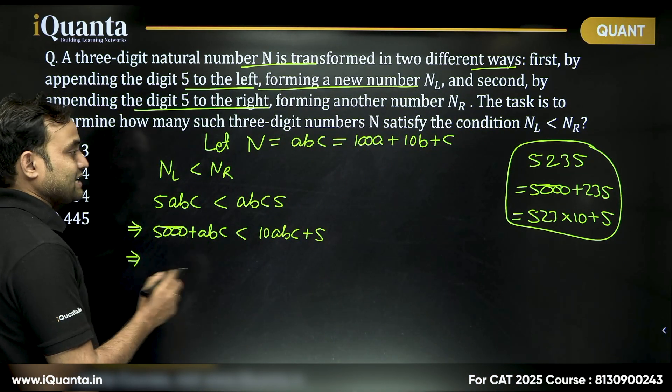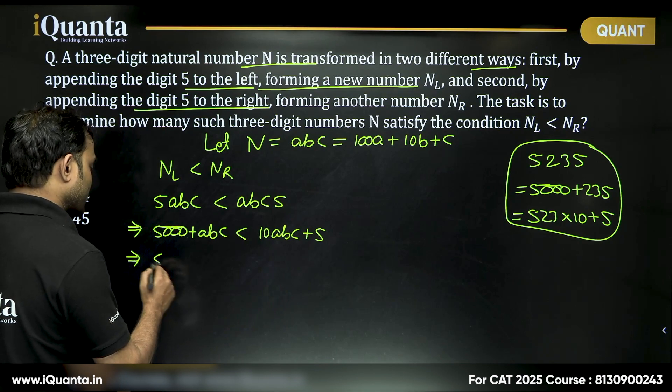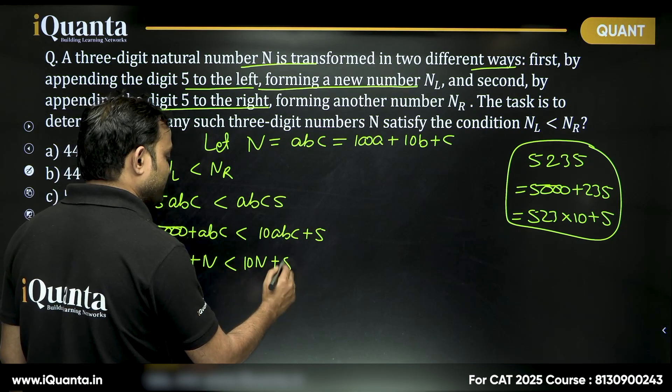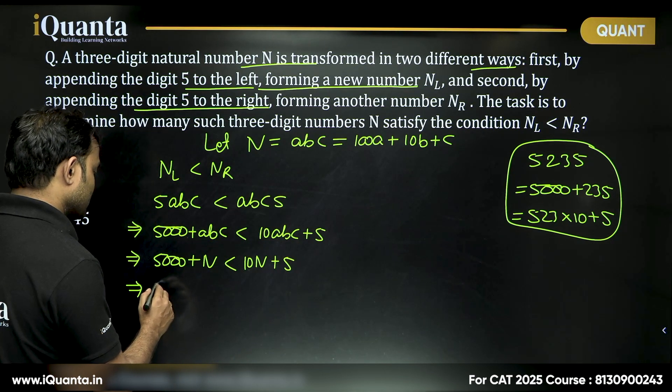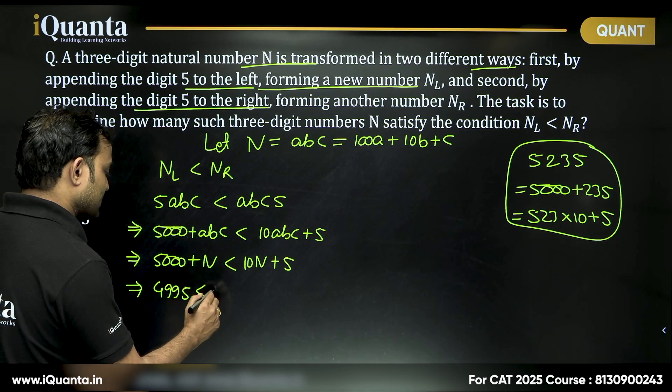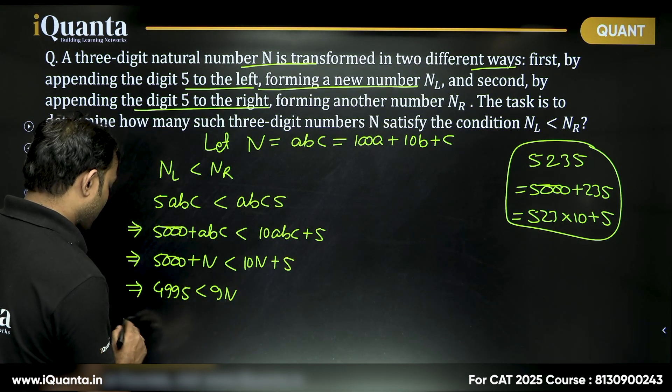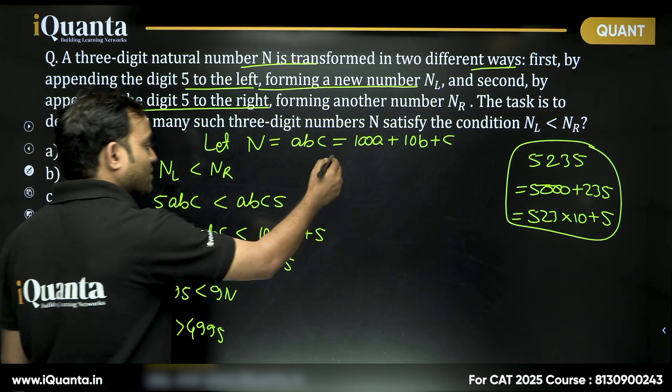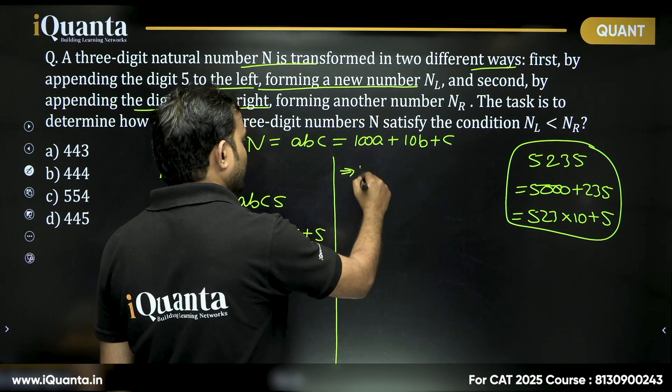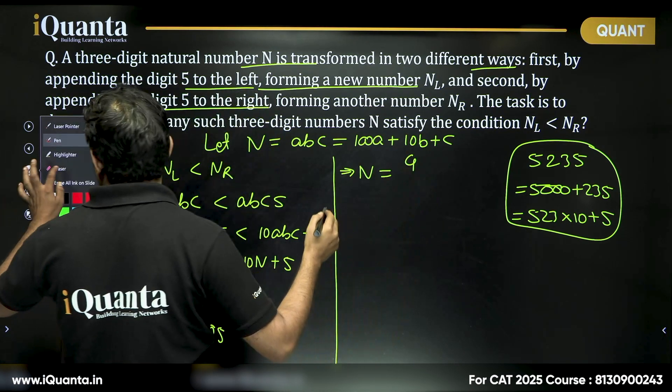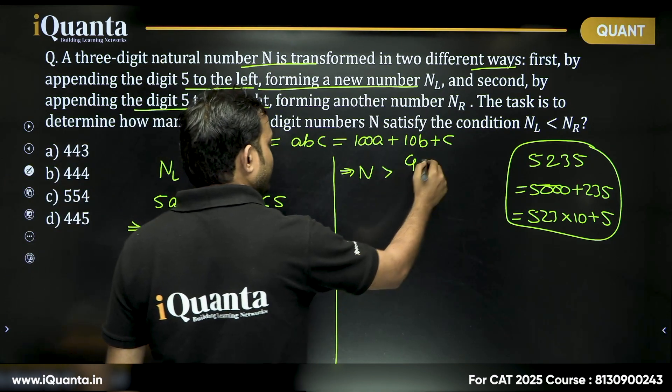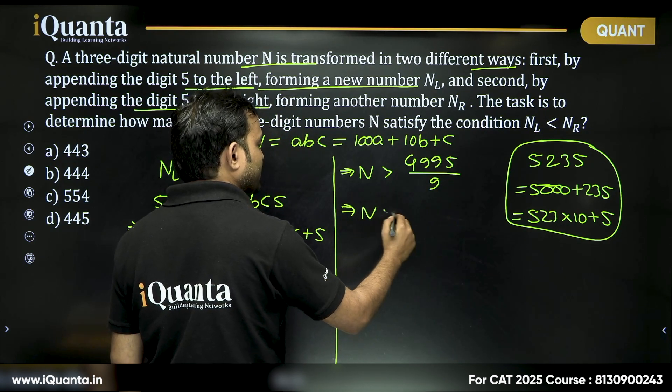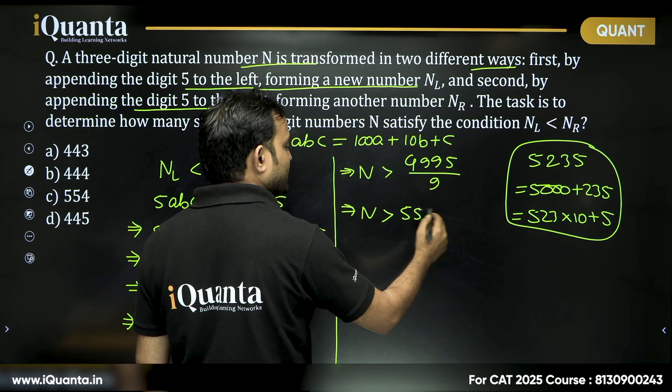Now, instead of abc can I put n? So, if I put n it will be 5000 plus n is less than 10n plus 5 or we can say that 4995 is less than 9n or 9n should be greater than 4995. From there we can say n will be greater than 4995 divided by 9 or n will be greater than 555.